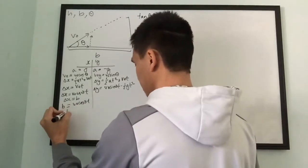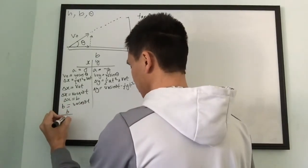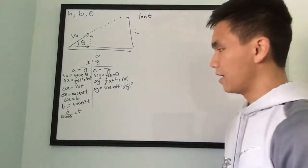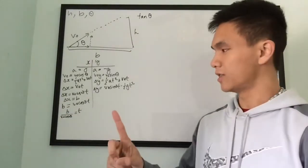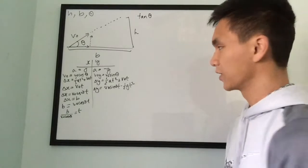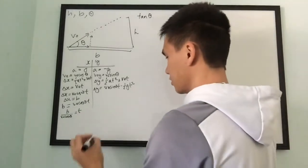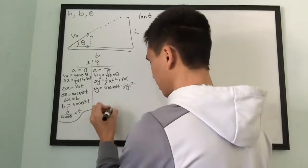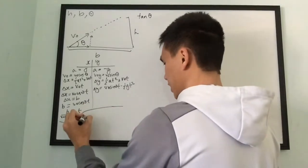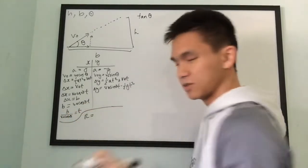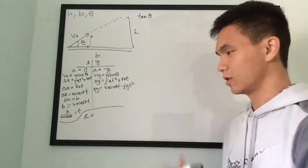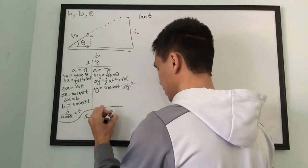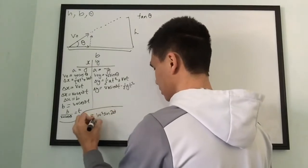She solves for time from b equals v-naught cosine theta · t. There's one more equation needed to solve this problem — the range equation. Range is the maximum distance a projectile travels for a ground-to-ground problem: Range equals v-naught² · sine(2θ) over g.